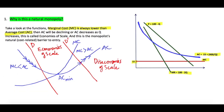In our case, marginal cost is lower than average cost, so average cost is declining as output increases — this is economies of scale. This creates a natural cost-related barrier to entry, because with average cost decreasing, a firm can set low prices that prevent competitors or latecomers from entering the market. It's natural that this industry becomes a monopoly, and it's also desirable from a social point of view.